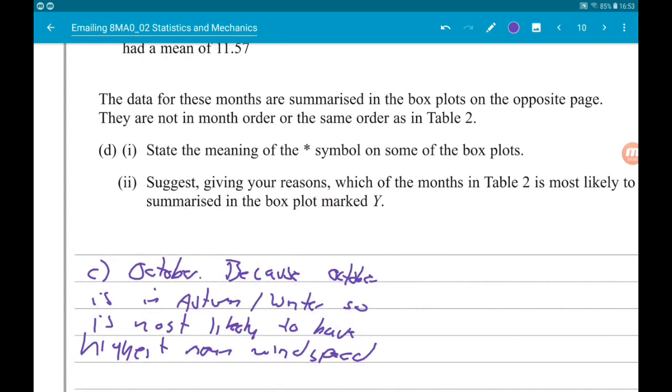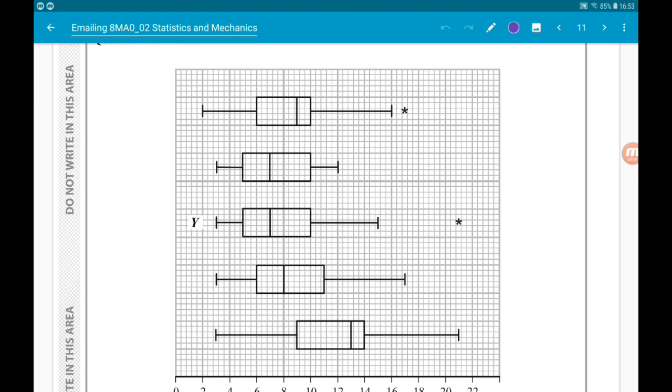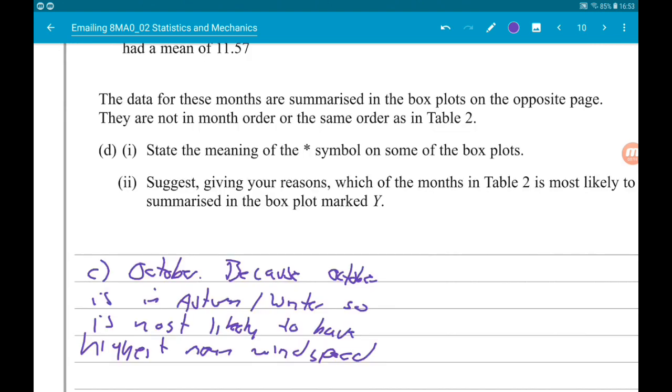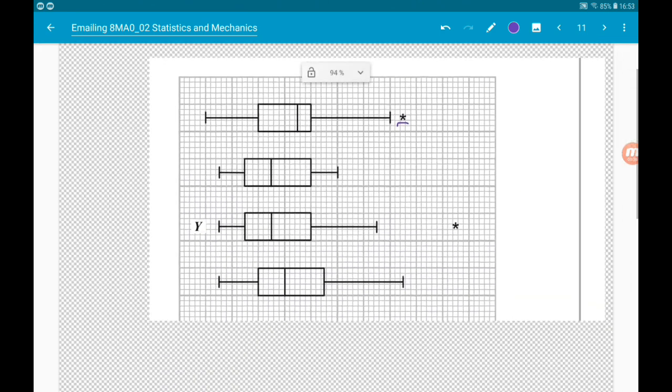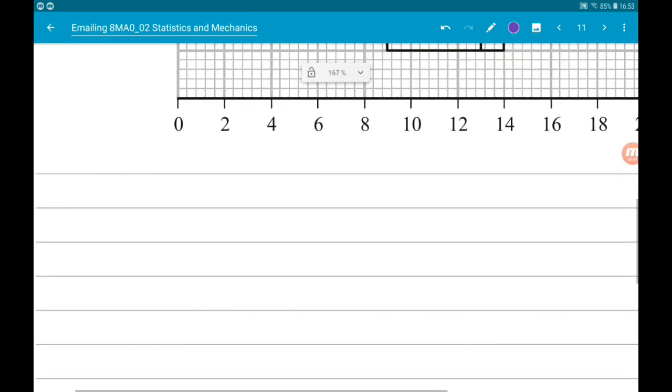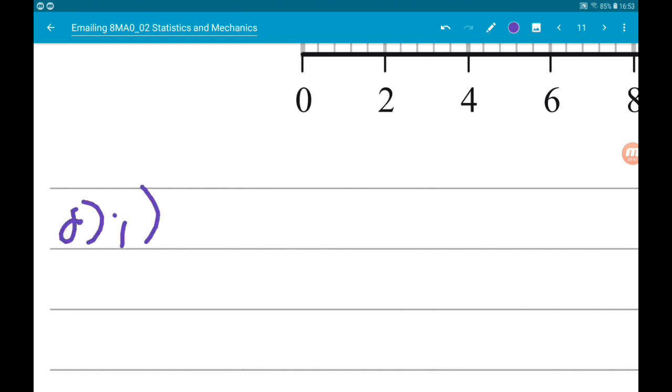Okay, then we're told the data for the months is summarized in the box plots on the opposite page. There are the box plots. We are told they are not in month order or the same order as in Table 2. Part 1 asks us to state the meaning of the star symbols on some of the box plots. So we got a star there, for example. So stars are used on box plots to represent outliers.